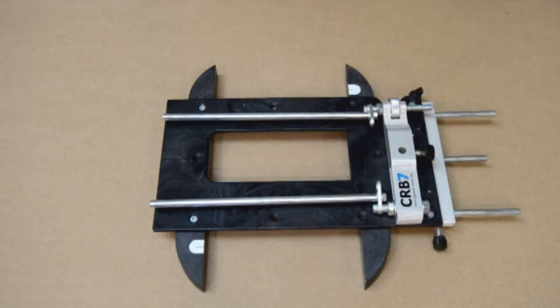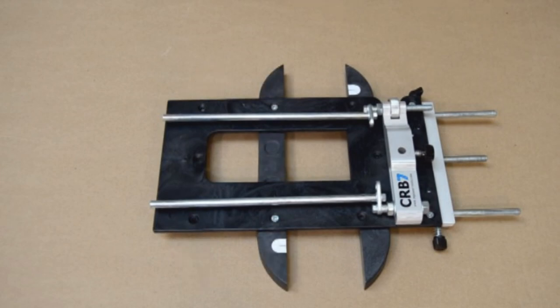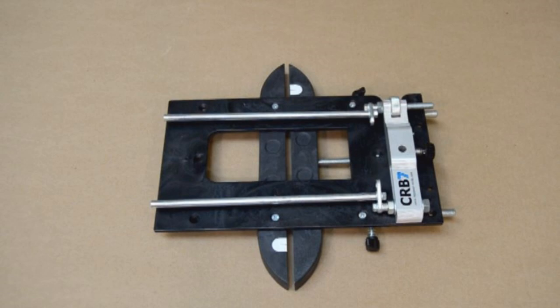Both can be attached to different locations on the CRB7 base, allowing the MHL to be adjusted from the width of your bit all the way up to 7 inches wide.